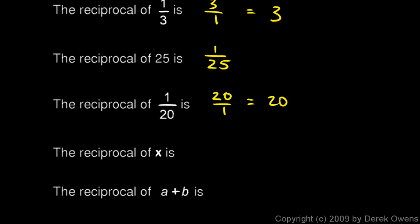Let's look at the same idea with some variables. The reciprocal of x is 1/x. The reciprocal of (a plus b) — think of that as a single thing — the reciprocal of (a + b) is 1 over (a + b), because (a + b) can be thought of as (a + b) over 1, so the reciprocal would be that flipped over.